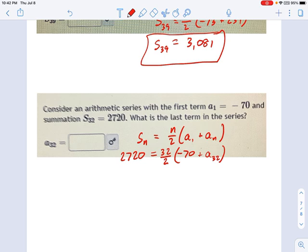So 32 over 2 is 16. And then I'm going to divide each side by 16, 2720 divided by 16. Okay, so I get 170 equals negative 70 plus the 32nd term. We add 70 to both sides, and we find that the 32nd term, the last term in the series, is 240.